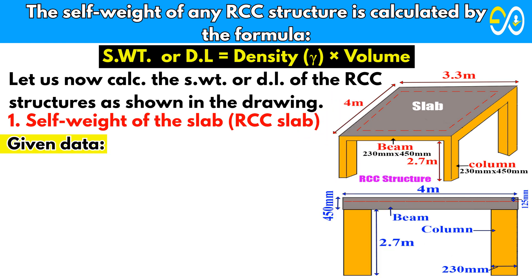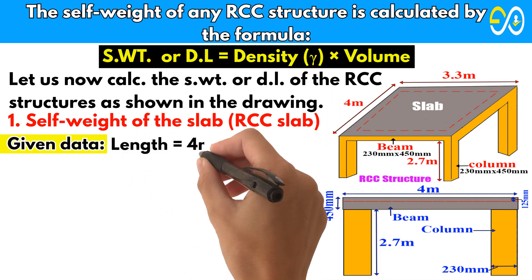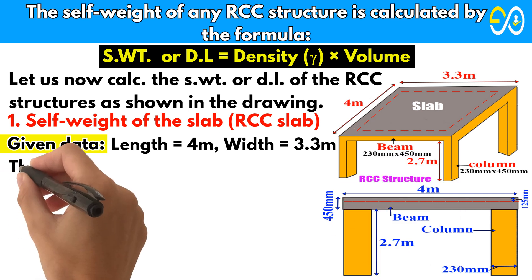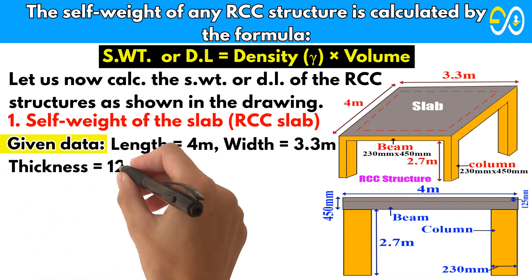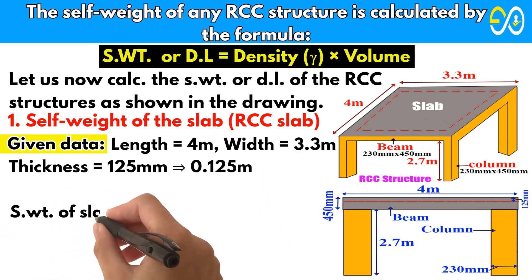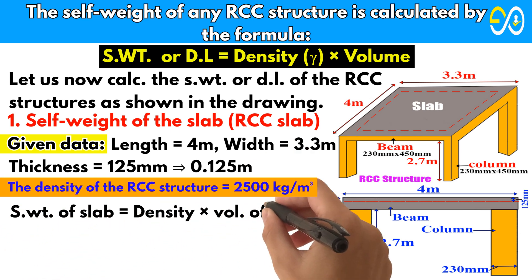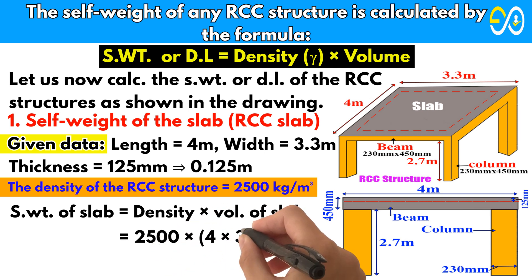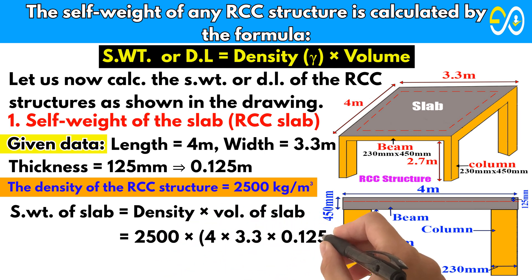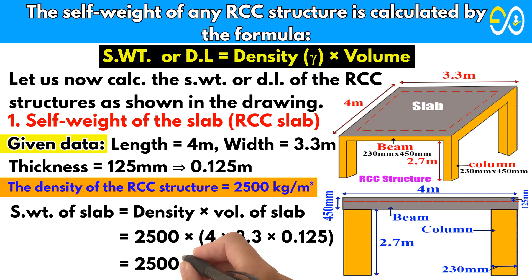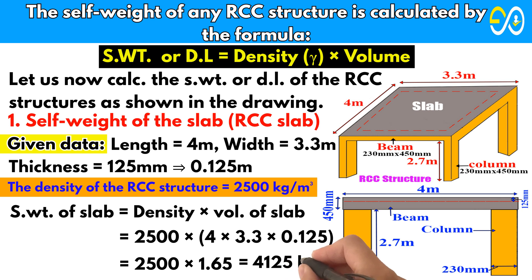Self-weight of the slab. Given data: length equals 4 meters, width equals 3.3 meters, thickness equals 125 millimeters equal to 0.125 meters. Self-weight of the slab equals density times volume of the slab: 2500 times 4 times 3.3 times 0.125 equals 2500 times 1.65 equals 4125 kilograms.